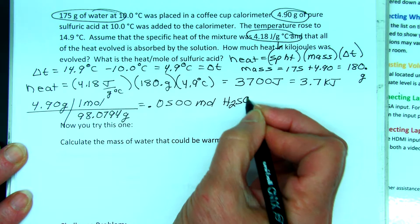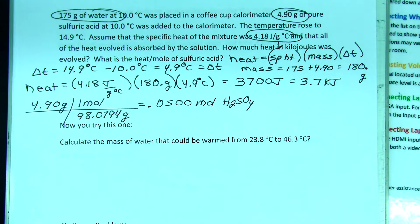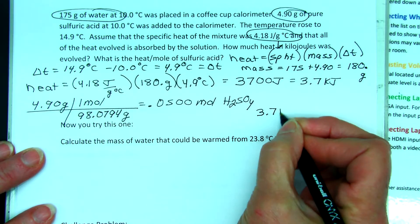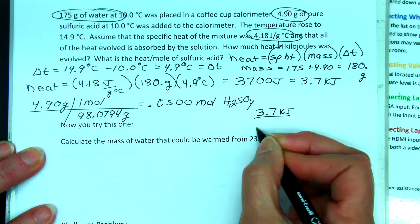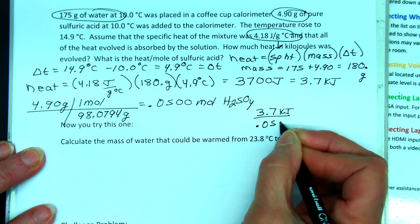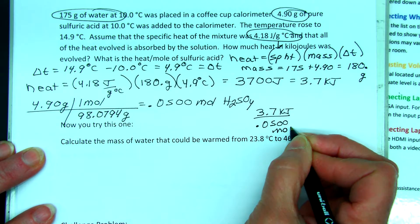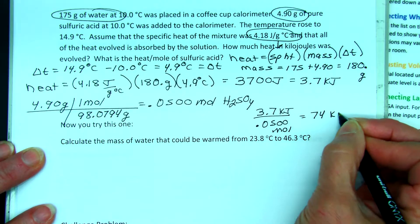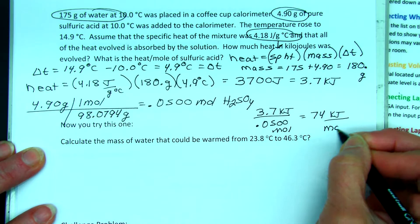H2SO4. So now I want heat per mole. I know the heat, 3.7 kilojoules divided by the moles, 0.05 moles, is equal to 74 kilojoules per mole of sulfuric acid.